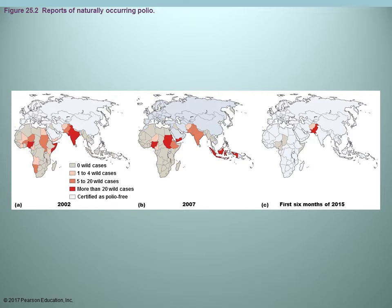This map shows over time — from 2002, the middle of 2007, and then to the beginning of 2015 — the number of wild cases of polio. As you can see, it's decreasing, which is a good thing. However, there has been concern that although numbers are decreasing, there may be some increase again. Looking at the first six months of 2015, most areas did not have cases, but there are select areas where the number of wild cases appears to be increasing.